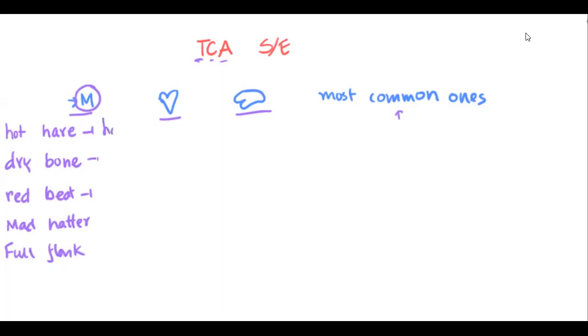Mad as a hatter refers to CNS disturbance, and full as a flask means the patient usually develops urinary retention and constipation. Anti-muscarinic effects may also include dryness of other areas such as dry mouth, and may also cause mydriasis leading to blurred vision, and sometimes postural hypotension.